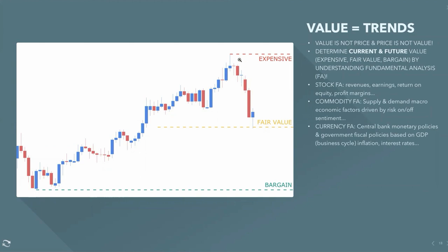When we look at charts, we understand that when prices go to the upside and can't go any higher and come down, that is generally considered expensive in the short term. In between an expensive area and a bargain area is what we call fair value — the 50% area — and to determine value we need to look at current and future value.